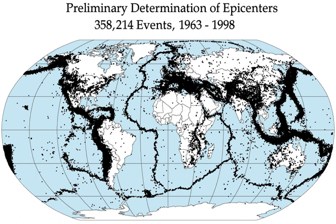This can easily be understood by considering the direction of the greatest principal stress — the direction of the force on the rock mass during faulting. In the case of normal faults, the rock mass is pushed down in a vertical direction, thus the pushing force equals the weight of the rock mass itself. In the case of thrusting, the rock mass escapes in the direction of the least principal stress, namely upward, lifting the rock mass up, thus the overburden equals the least principal stress. Strike-slip faulting is intermediate between the other two types. This difference in stress regime in the three faulting environments can contribute to differences in stress drop during faulting, which contributes to differences in the radiated energy, regardless of fault dimensions.